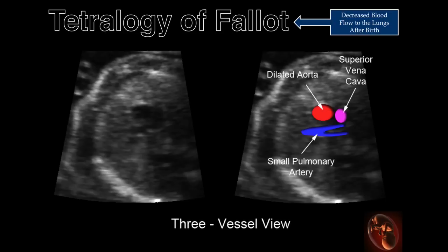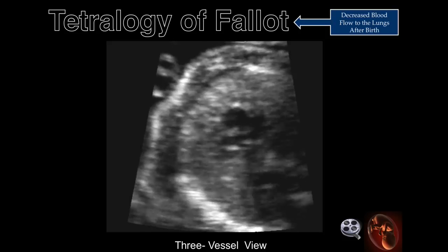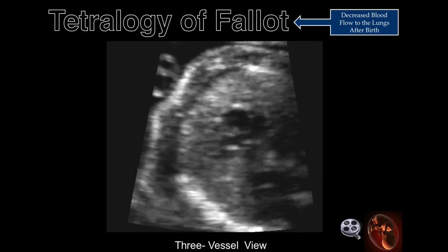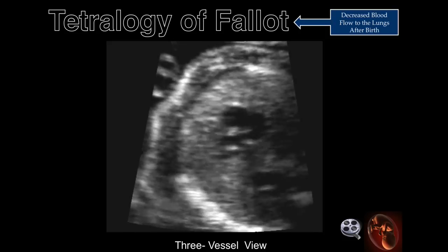This view is obtained in the transverse plane just cephalad to the four-chamber and five-chamber views previously described. This is the three-vessel view, which demonstrates the small pulmonary artery lying perpendicular to the large aorta seen in cross-section. The superior vena cava is also observed in cross-section adjacent to the aorta. This spinning clip illustrates the dilated aorta with a smaller pulmonary artery lying beneath it.